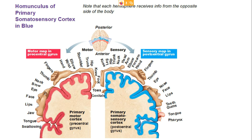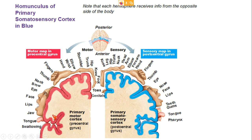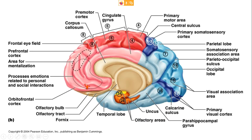Moving upward from the lower aspect of the precentral gyrus: neurons supply the face, then the head, then the hands, then the trunk, shoulder, then the thighs and knee. So the lower aspect supplies the pharynx, just above supplies the tongue, just above that supplies the face, and so on moving upward.